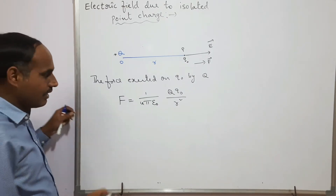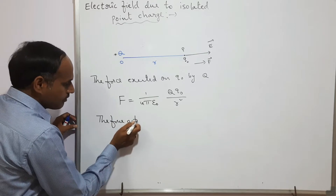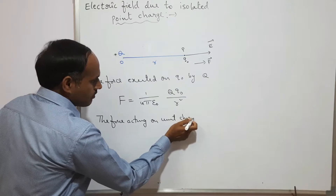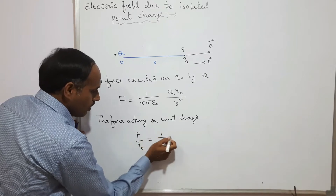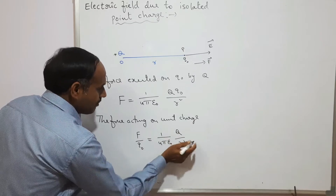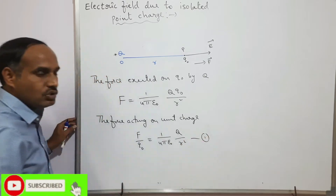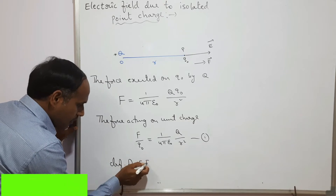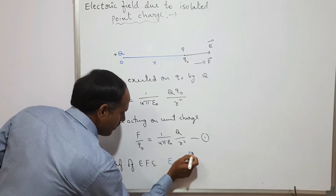The electric field strength is defined as the force acting on a unit test charge. From the definition of electric field strength, we can write: E = F / q₀.